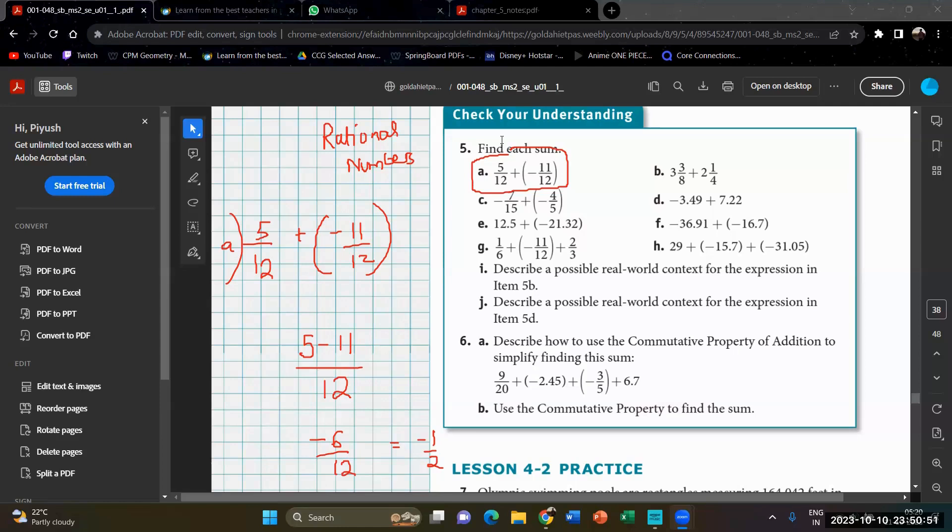Now let's go for problem C. What is problem C? Negative 7 over 15 plus negative 4 over 5. Now I told you, we need to solve this like fractions. So we need to multiply it. Which number will change? Will my first number change or the second number? Second number. What will the second number become?